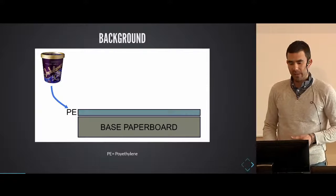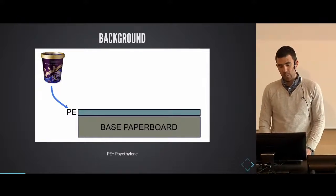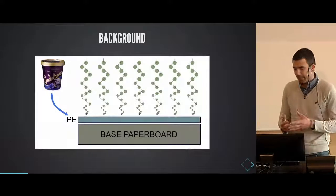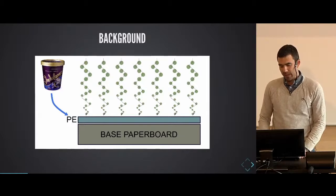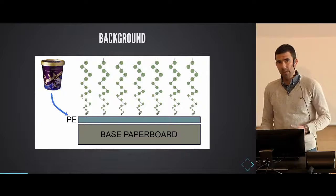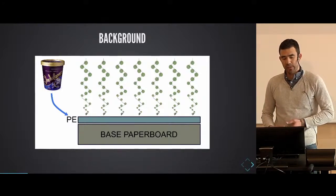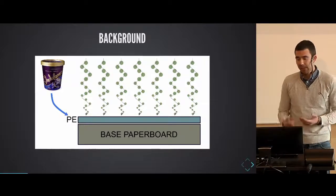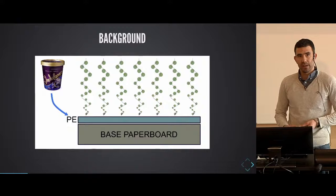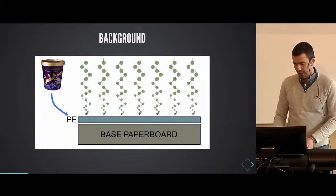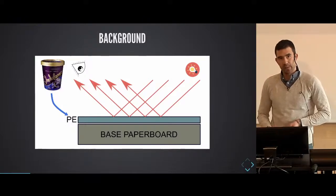When combined with paperboard, polyethylene produces an inexpensive material with good mechanical and optical properties suitable for many applications. The main functionality this PE coating brings is that it acts as a shield to protect the container product from external elements such as oxygen, water vapor, or other gases that can deteriorate the shelf life of the product. If placed on the inside of the material, it acts as a container, allowing liquids to be placed inside without leaking out. But as important as this barrier function is, there also needs to be added value from optical quality.